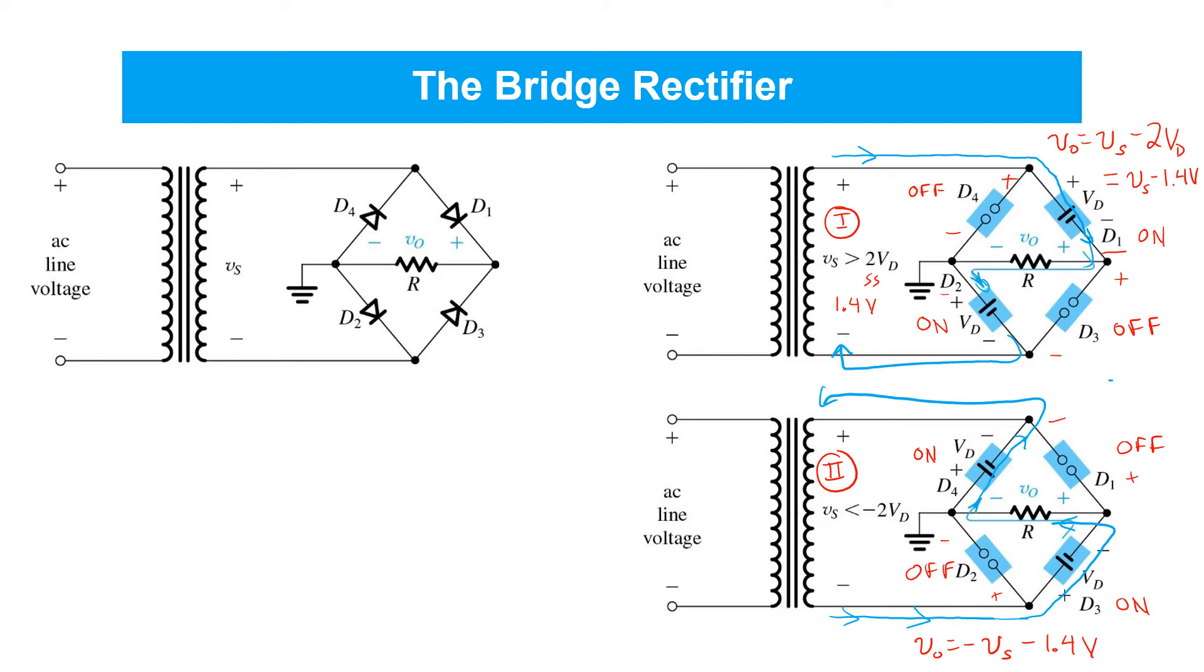Finally, there is case three, a trivial case where VS is insufficient to turn off two diodes in series. That is, its absolute voltage is less than about 1.4 volts. In that case, all the diodes are off. No current is flowing anywhere, and therefore VO is simply equal to zero.